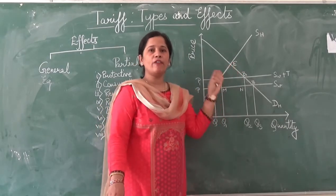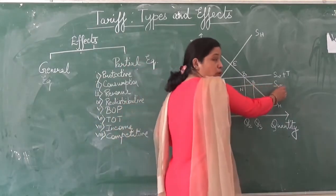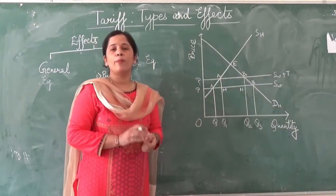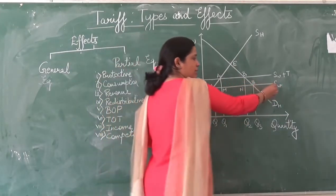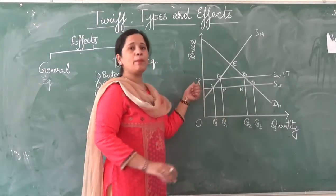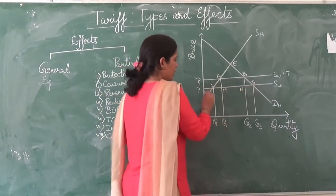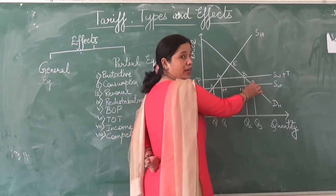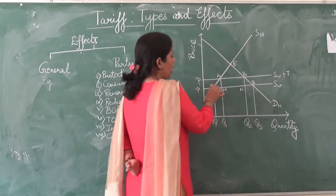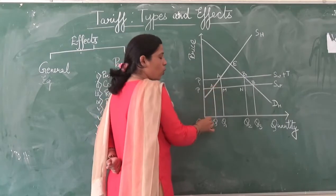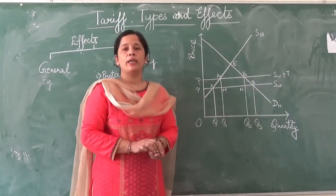The country will import a commodity if it can get it at lower prices. PSW is a perfectly elastic supply curve of the rest of the world. At lower prices, a large number of commodities are available. The equilibrium will be at point B, where the quantity demanded by the economy is OQ3. The quantity supplied domestically is OQ, meaning QQ3 is the import of a commodity before the imposition of a tariff.